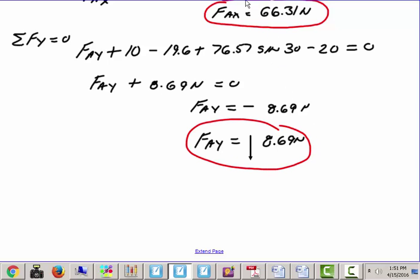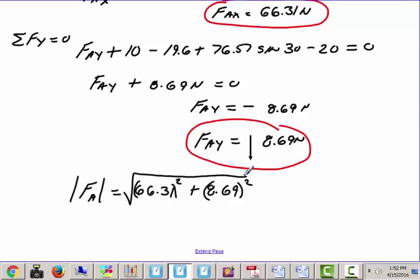Now, to find the actual magnitude. The magnitude of the force of A is going to equal to 66.31 squared plus 8.69 squared. I'll have to just take the square root of that. I take 8.69 squared plus 66.31 squared. I take the square root of that. That gives me a value of 66.88 newtons.